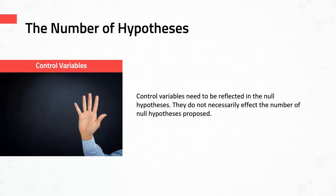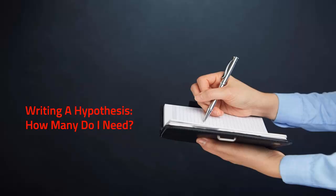We have one final type of variable to consider: a control variable or covariate. It's important to note that the control variable should be reflected in the null hypothesis; however, it's not necessarily going to affect the number of hypotheses you propose. So the number of null hypotheses proposed for each research question is dependent upon the number of independent, dependent, predictor, criterion, or variables of interest in that question. This concludes this tutorial, and now you should be ready to identify each research question and write the correct number of null hypotheses for each question in your proposal.